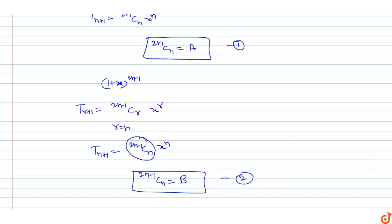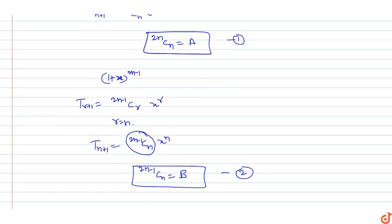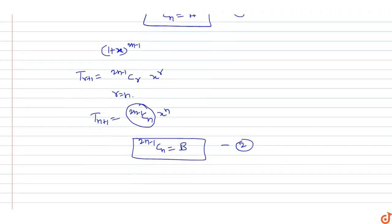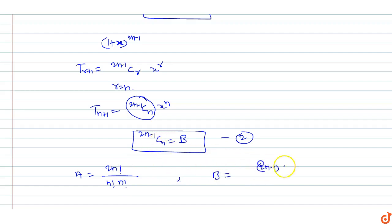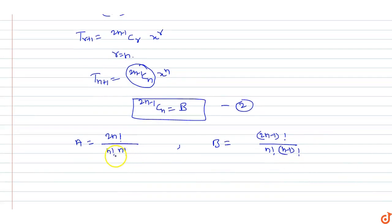From equations 1 and 2: a = 2nCn = (2n)! / (n! * n!) and b = (2n-1)Cn = (2n-1)! / (n! * (n-1)!). We can see that from here we cannot directly relate a and b using the given options.